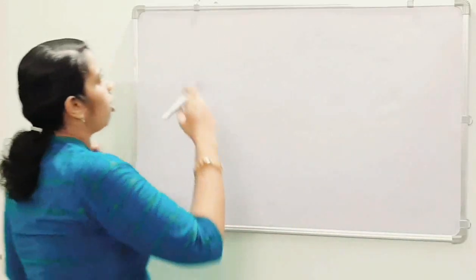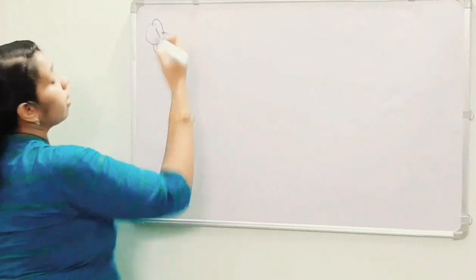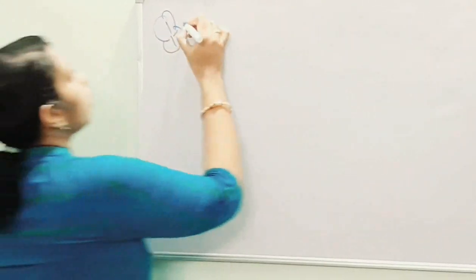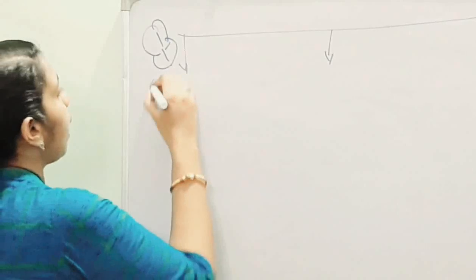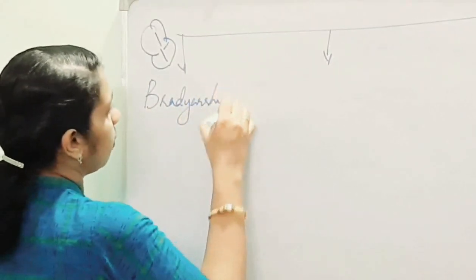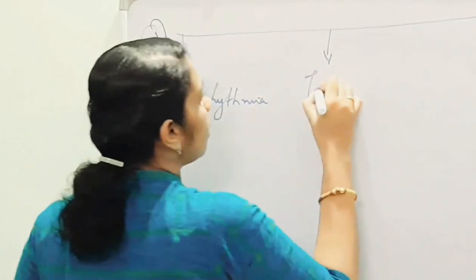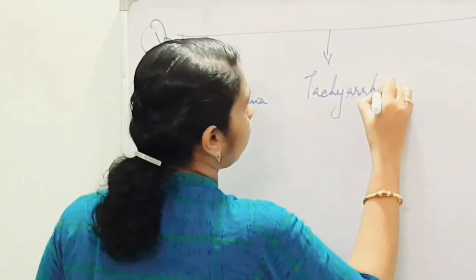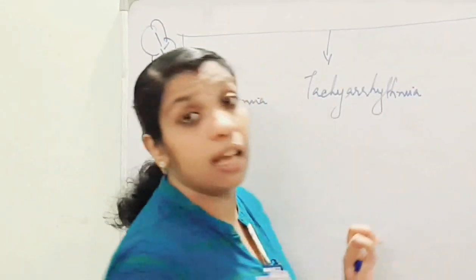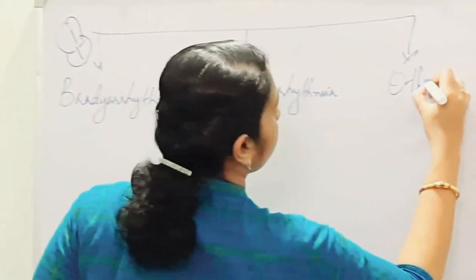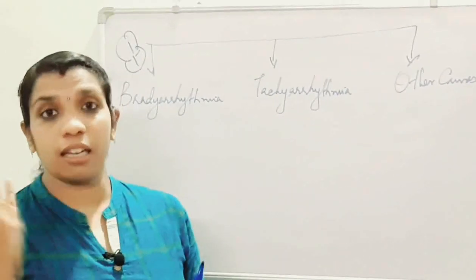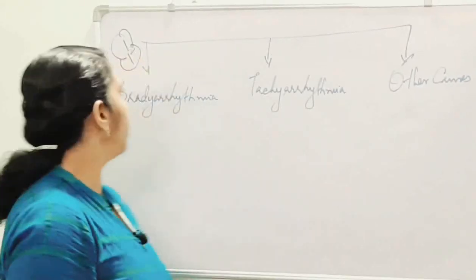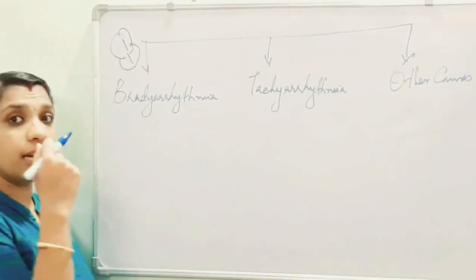The third most important cause of syncope is cardiovascular disorders. Cardiovascular disorders are divided into three categories: bradyarrhythmia, tachyarrhythmia, and other causes. Arrhythmia means a change in the rhythm of the heart.